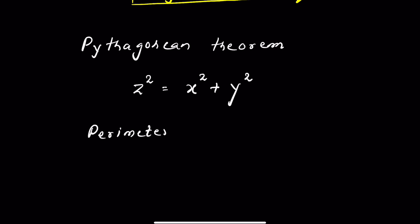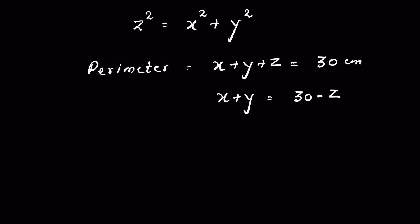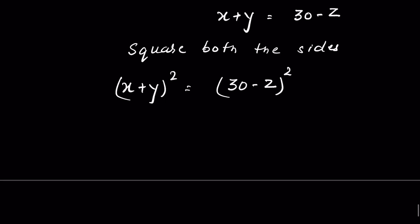In the given question, we have the perimeter. The perimeter of a triangle is the sum of its three sides, so X plus Y plus Z is equal to 30 centimeters, or X plus Y is equal to 30 minus Z. Now squaring both sides: X plus Y whole squared is equal to 30 minus Z whole squared.